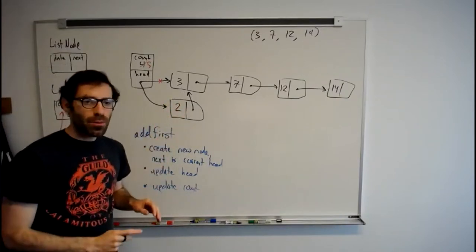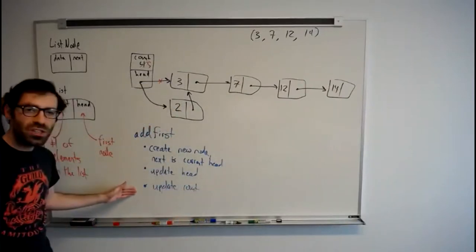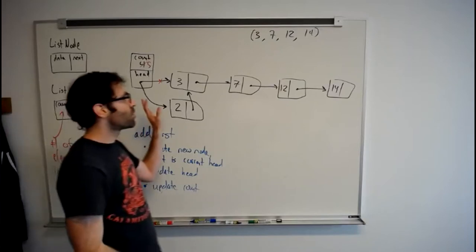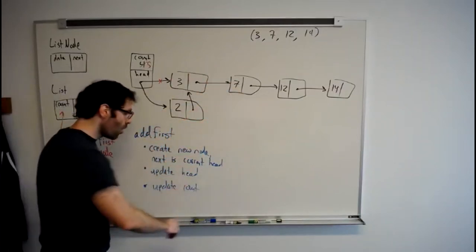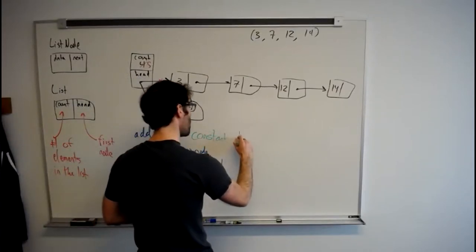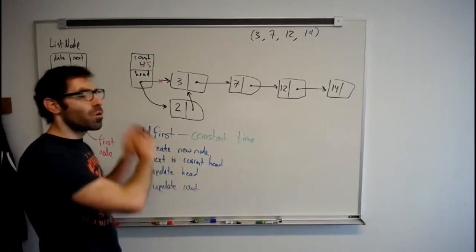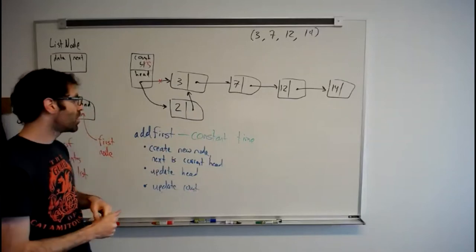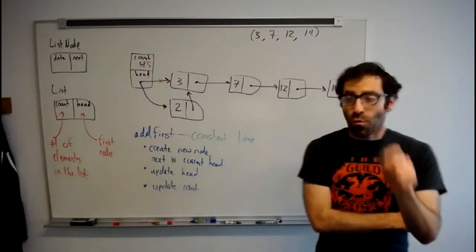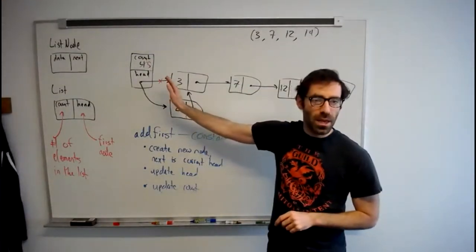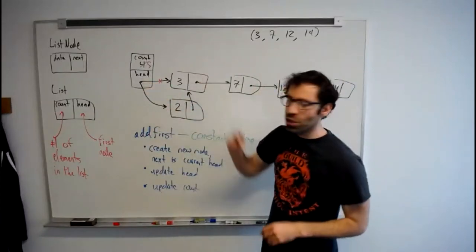One thing to point out about this operation is that the number of steps involved was not affected by how many nodes were in the list — it is always these three steps. So the amount of work add first takes has nothing to do with the amount of data, which is why we describe this as a constant time operation: a fixed amount of work regardless of the amount of data. This is a notable difference from our array list, where inserting at the beginning required shifting all elements over. With our linked list, we just change a couple references.